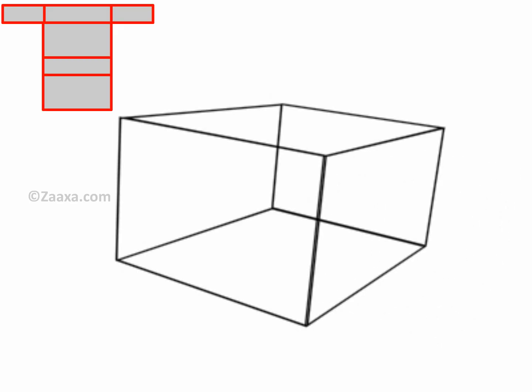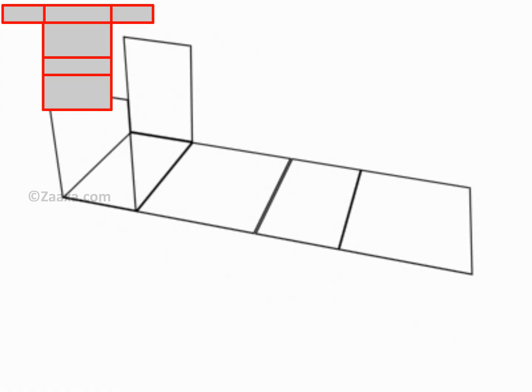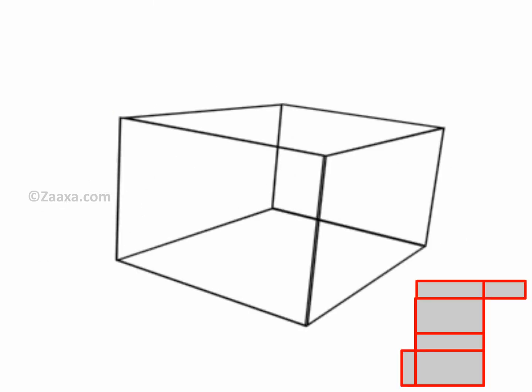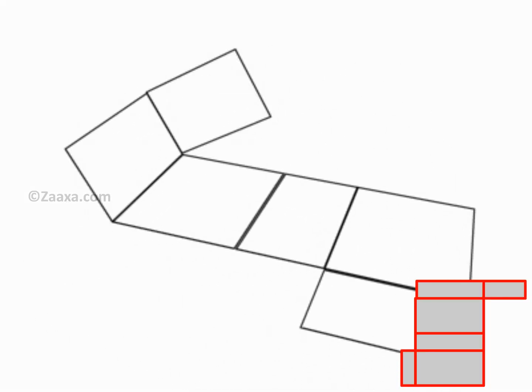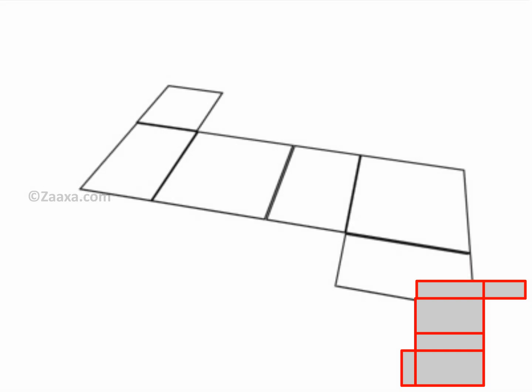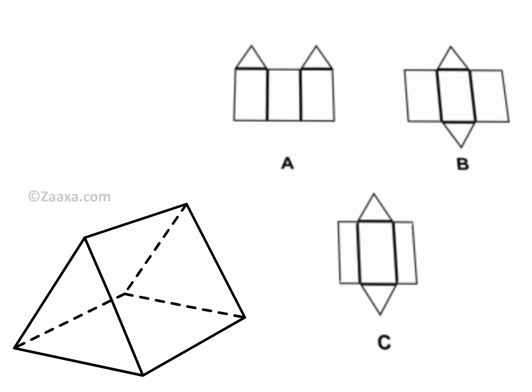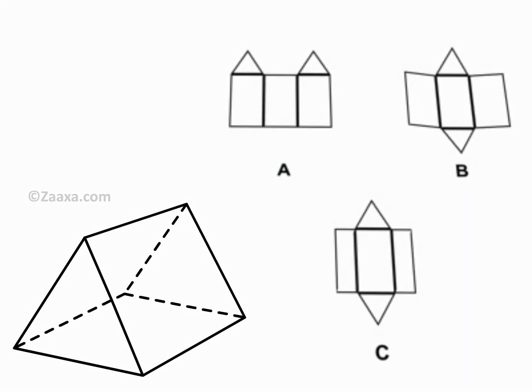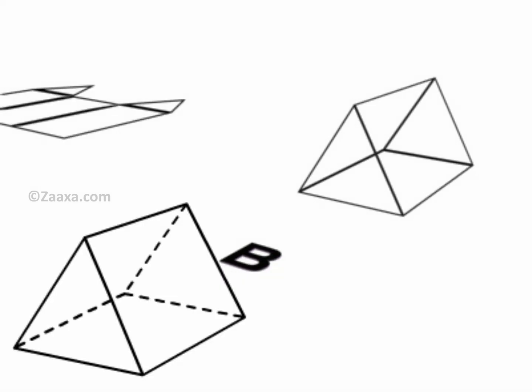Now, let us make a net for this cuboid. Note that this net is not unique. This means that there can be a different net for the same cuboid. As long as a net can fold into the required solid, we say that it is a net of the given solid. We can say this is a net of the solid given because it can be folded to get the shape of the solid. Can you guess which is the net corresponding to the given solid? We see that only net B can be folded to get the given solid, so the net corresponding to the given solid is B.